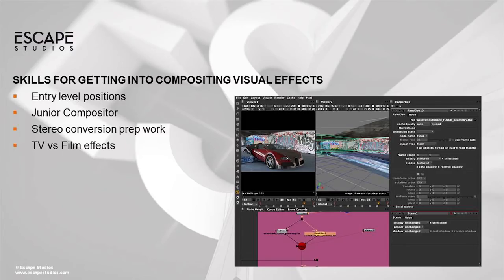Looking at skills for getting into compositing visual effects — what types of roles do people enter and what's important to look out for? The industry is certainly changing. Over the last 10 years, larger companies have outsourced some entry-level positions — rotoscoping for compositing, match move for 3D work — to India and China. But there's still enough work in London and other cities. The shots that stay locally are the more difficult, challenging ones, so in a sense you've got the cream of the crop of the shots.